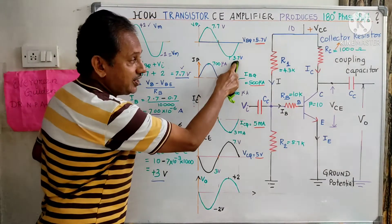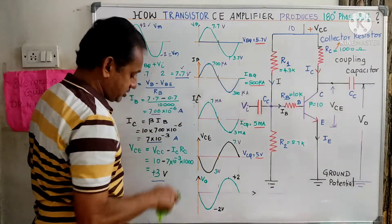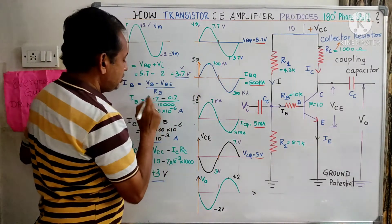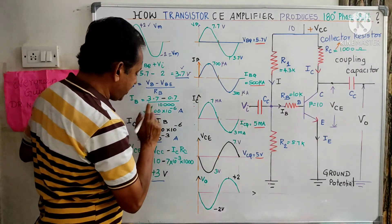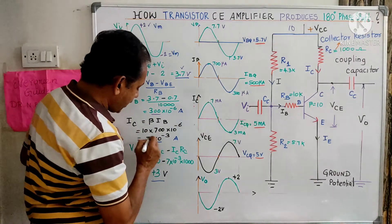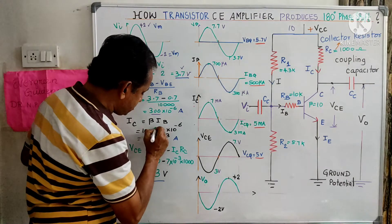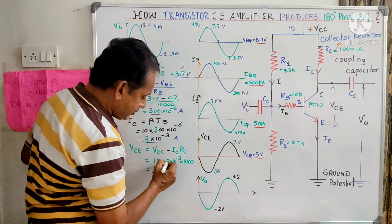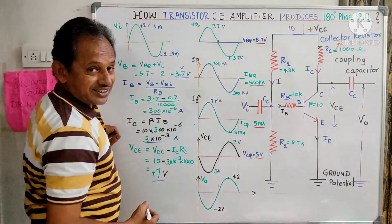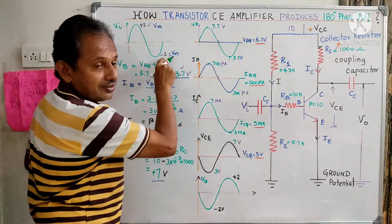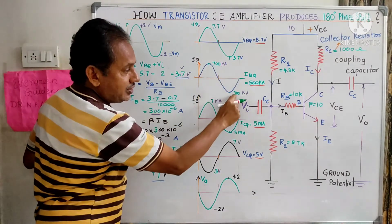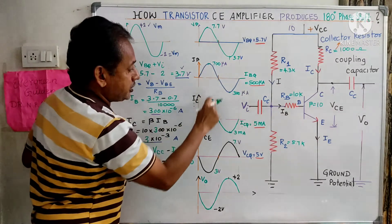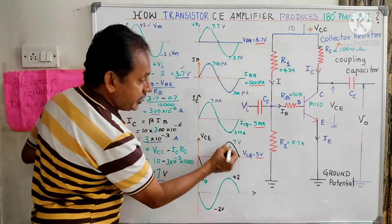For the negative half cycle, the base voltage is 5.7 − 2 = 3.7V. The base current is (3.7 − 0.7) / 10,000 = 300 microamps. The collector current becomes 10 × 300μA = 3 milliamps. VCE = Vcc − IC × RC = 10 − 3 = 7 volts. So when input goes negative, the output increases from 5V to 7V.